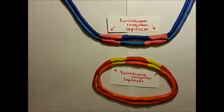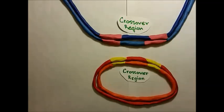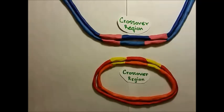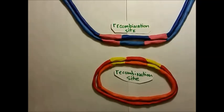These symmetrical pairs of sequences are recognized and bound by recombinase proteins. The area in between these recombinase recognition sequences is known as the crossover region — this is where DNA cleavage and rejoining occur. Combined, the recombinase recognition sequences and the crossover region are known as the recombination site.